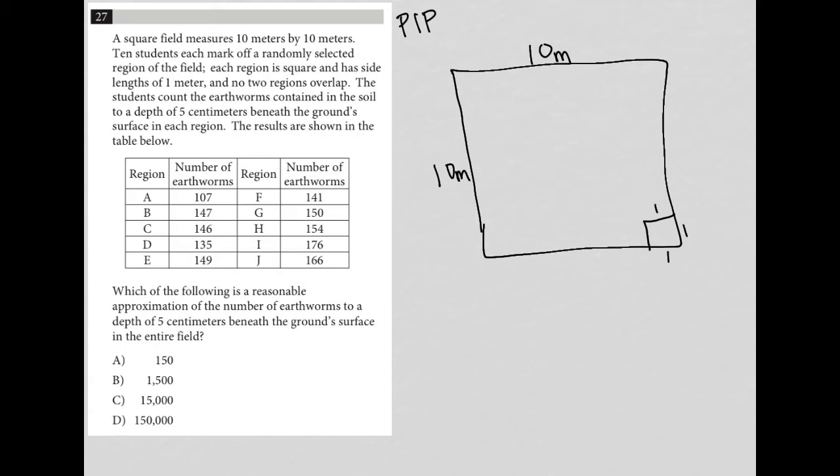In fact, I should put the one there. I'll get rid of that. And then the question goes on to say the students count the earthworms contained in the soil to a depth of five centimeters. That might be important at some point beneath the ground surface in each region. The results are shown in the table below.